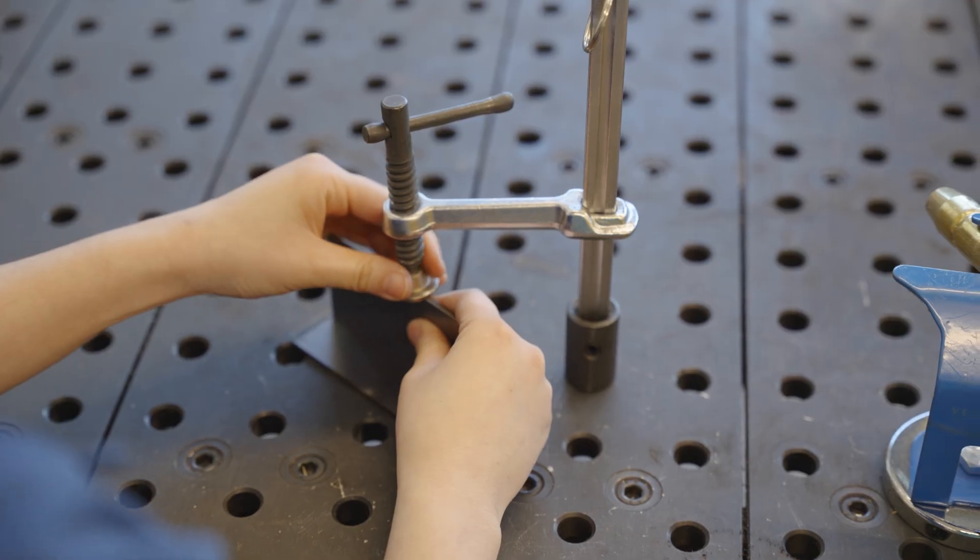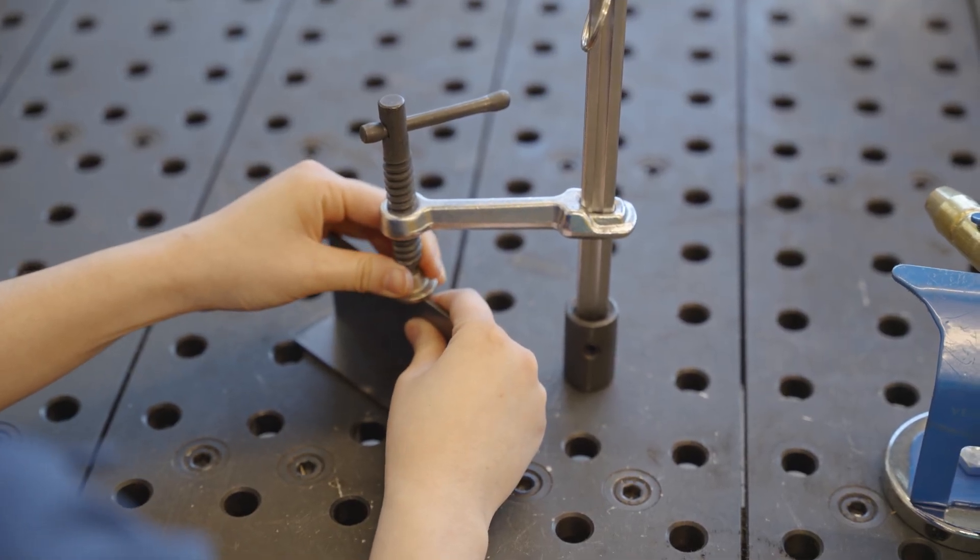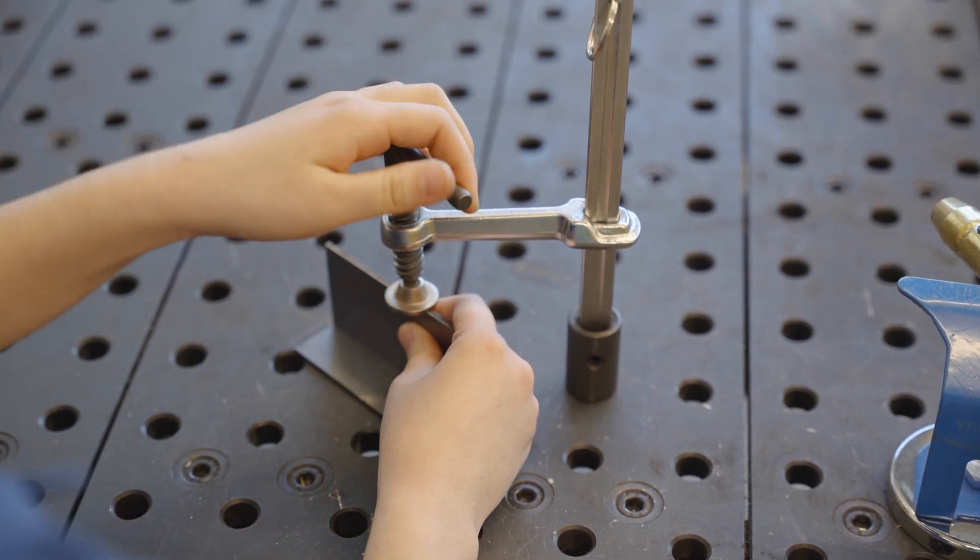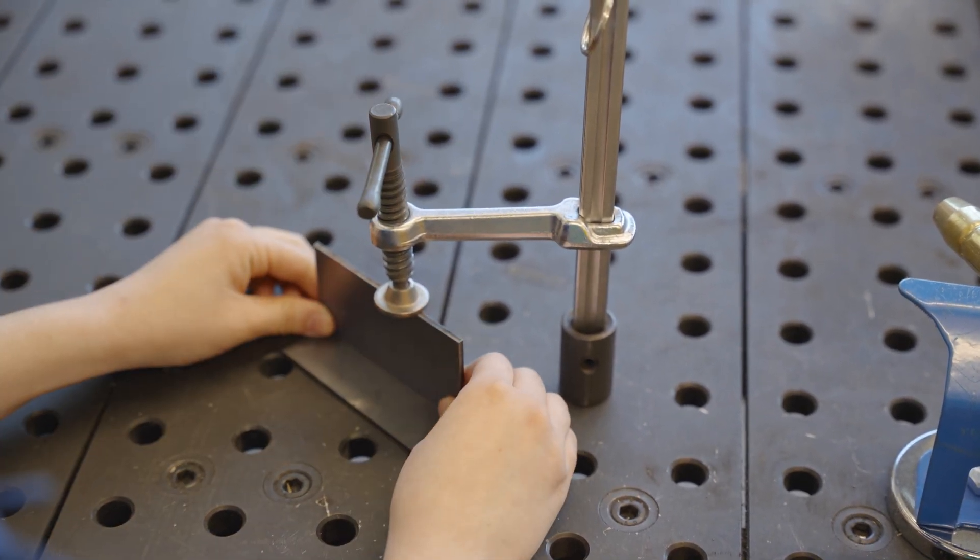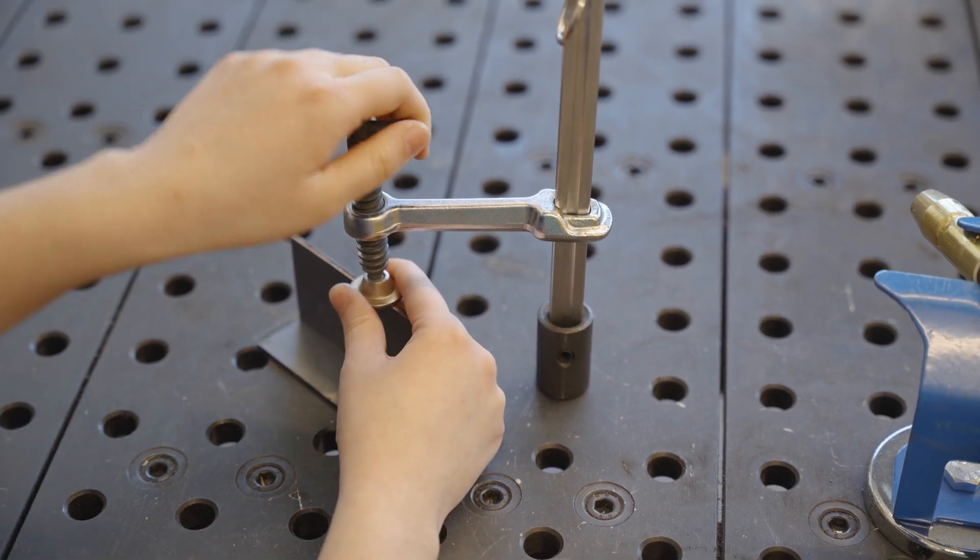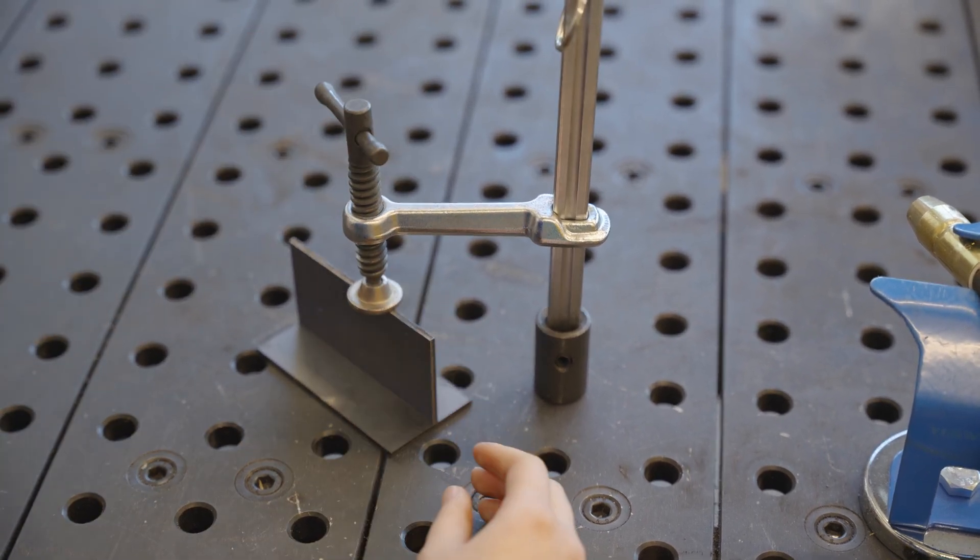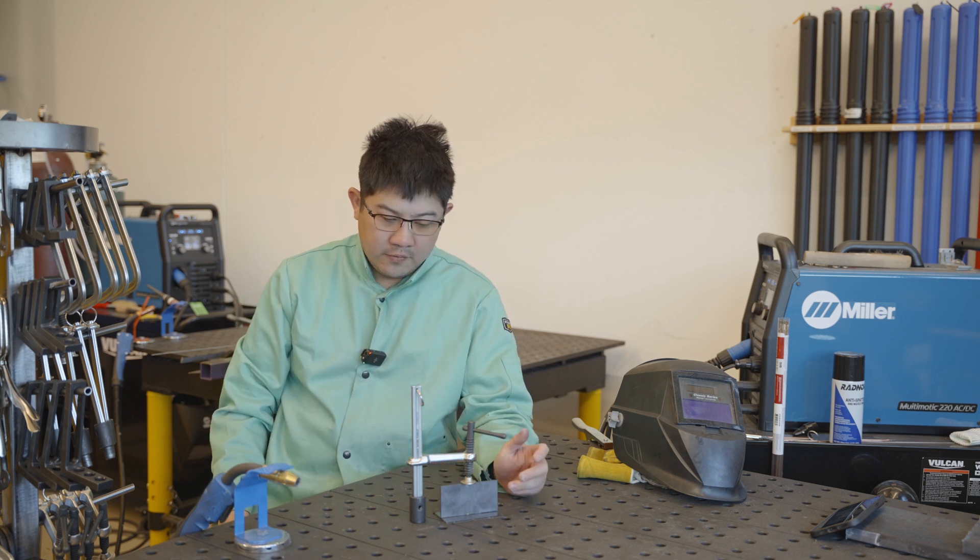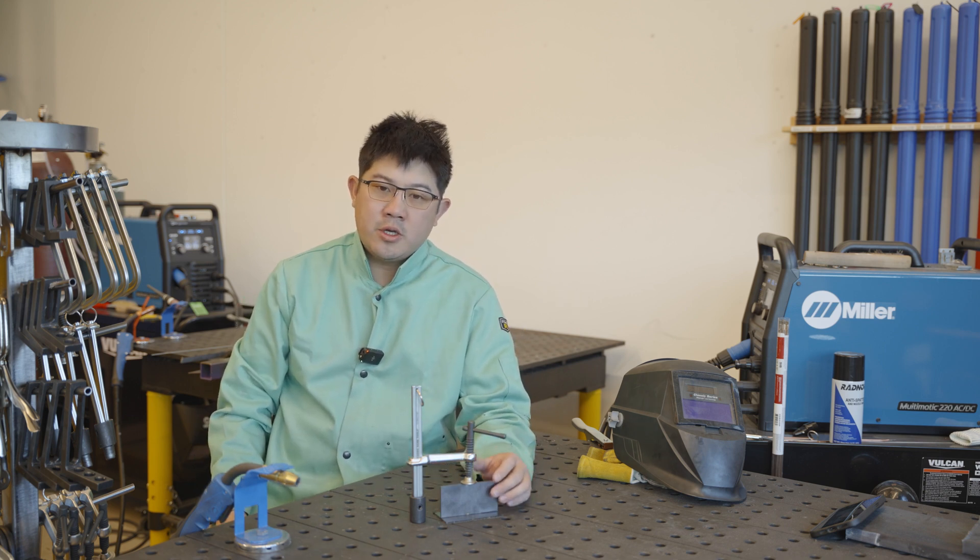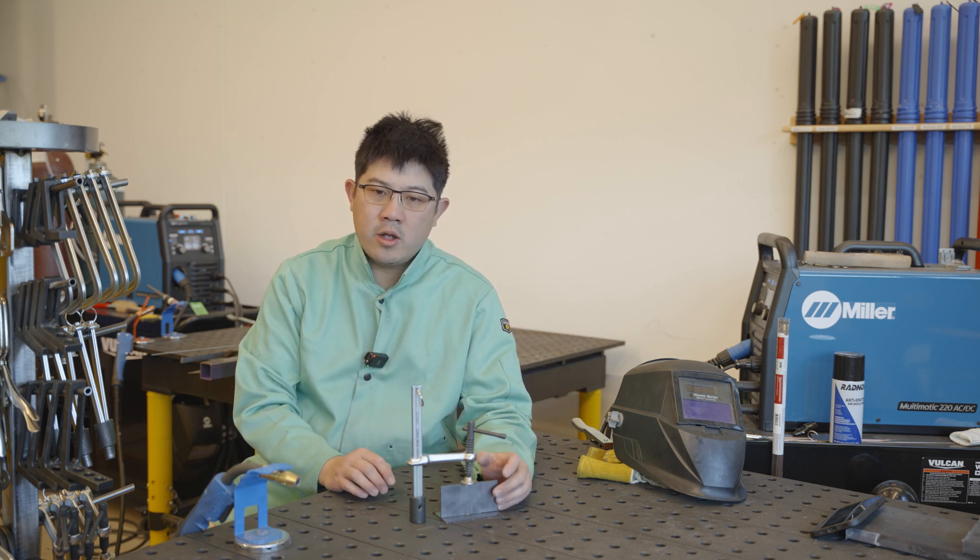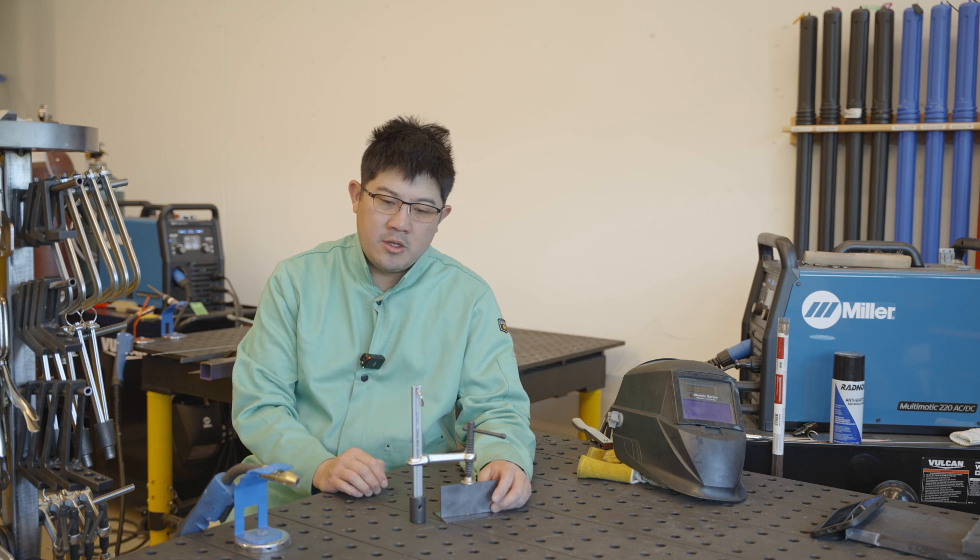Position our material over the clamp. That's going to hold your part very securely, allowing you to weld on it. If this now required a lot of precision, you can use rulers and a square to make sure that the part is clamped exactly how you want. Because this is just a demo, I'm not going to be too concerned about that.